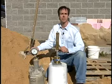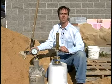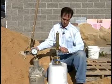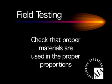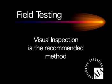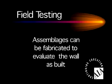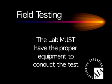Mortar air content can be checked with a standard concrete air meter. Consistency can be checked with a modified cone penetrometer. Lab testing of the materials in accordance with ASTM C-270 is the preferred method, but if you are specifying under the proportion table and the materials meet their individual standards, no testing is necessary. In the field, the inspector should check that proper materials are being used in the proper proportions. Visual inspection is the recommended method, but other tests are available like the cement aggregate ratio test. Assemblages can be fabricated and tested to evaluate wall performance as built, but the lab must have proper equipment.